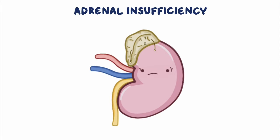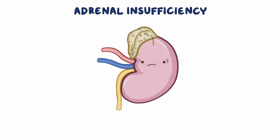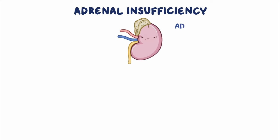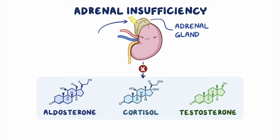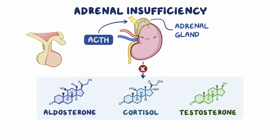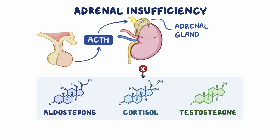Adrenal insufficiency is an endocrine disorder that occurs when the adrenal glands don't produce enough of one or more of the hormones: aldosterone, cortisol, and testosterone. Normally, the adrenal glands are stimulated to produce these hormones by adrenocorticotropic hormone, or ACTH, a hormone produced by the pituitary gland, a small gland at the base of the brain.